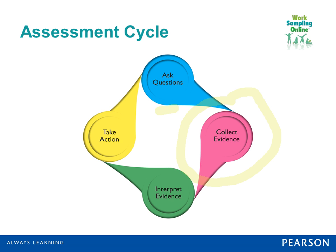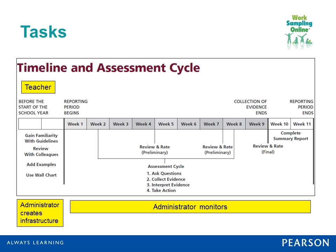Once you've collected and documented the evidence, you interpret it to determine whether the child's knowledge and skill is consistent with grade or age level expectations. If it is, you might take action to move on to the next set of concepts. If they're not demonstrating knowledge at the expected level, you might adapt instruction and reteach some concepts. At the beginning of the school year, there are a number of tasks in which both administrators and teachers are engaged.